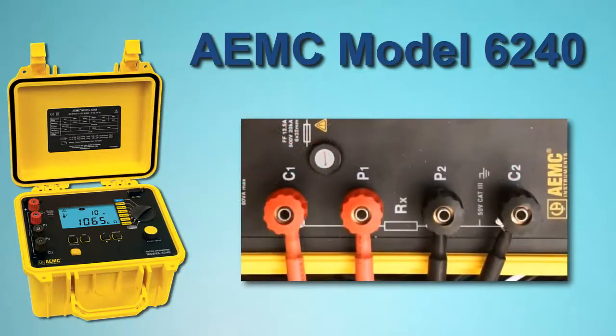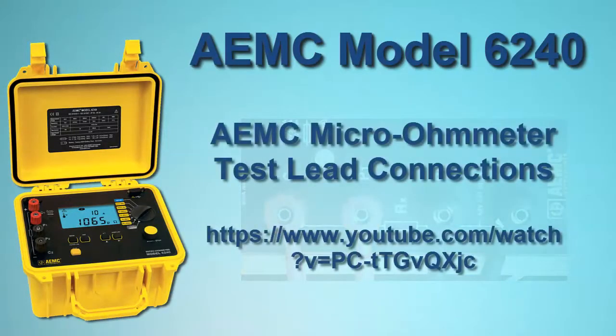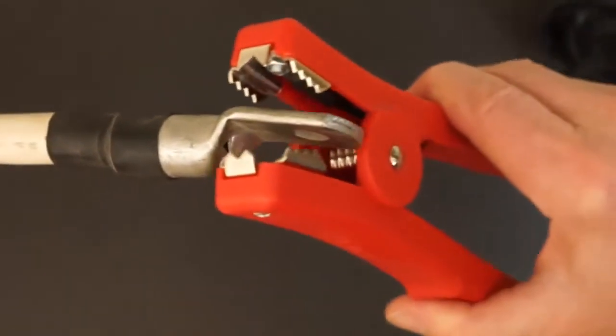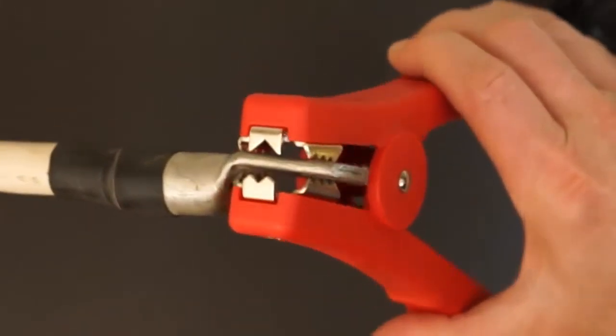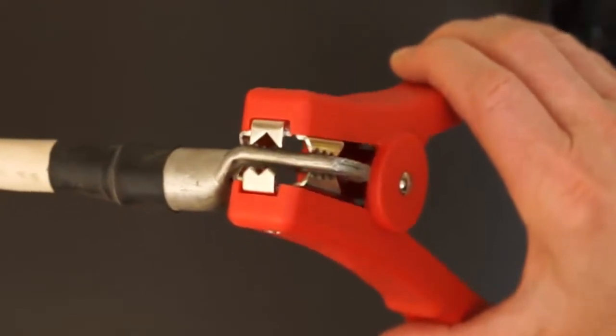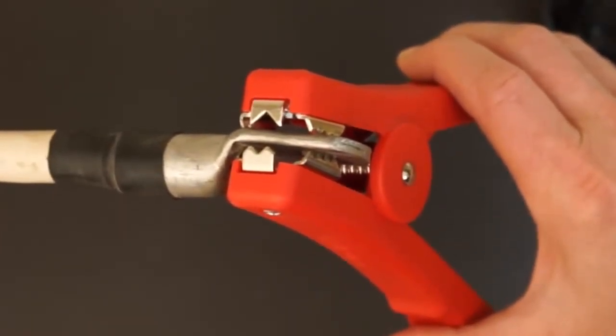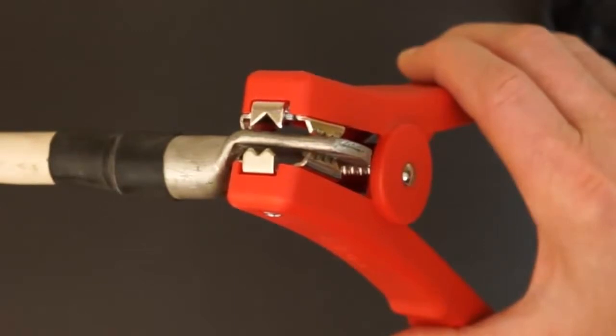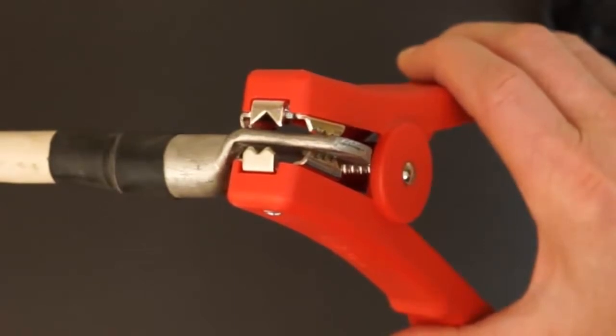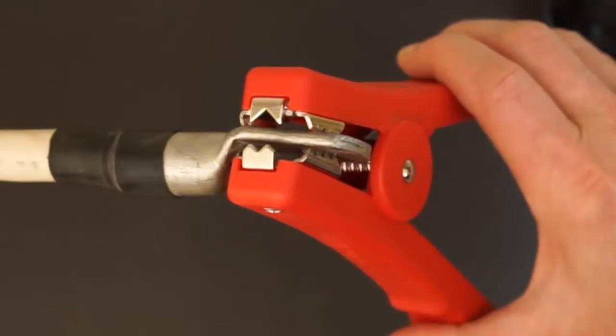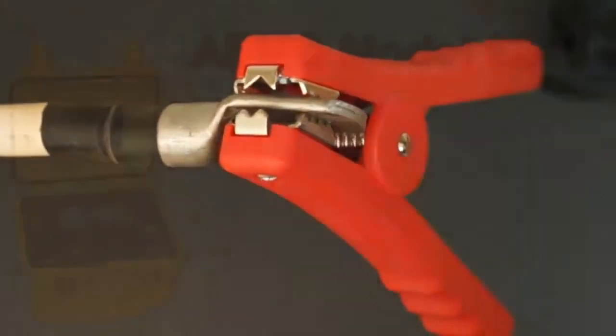Be sure all leads are correctly attached to the instrument's terminals, as explained in a separate AEMC video. When using HIPPO or alligator probes, ensure that both jaws are in contact with the resistor under test. One jaw functions as a source lead and the other as a sense lead. Therefore, both must be in firm contact with the resistor's surface to provide an accurate measurement.